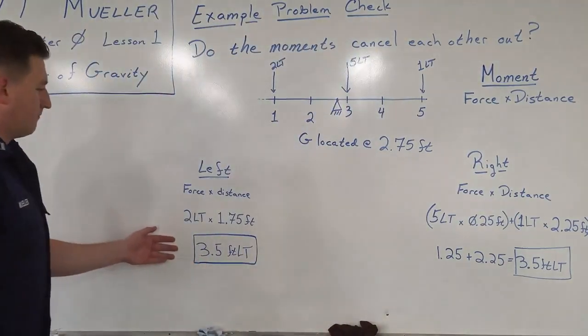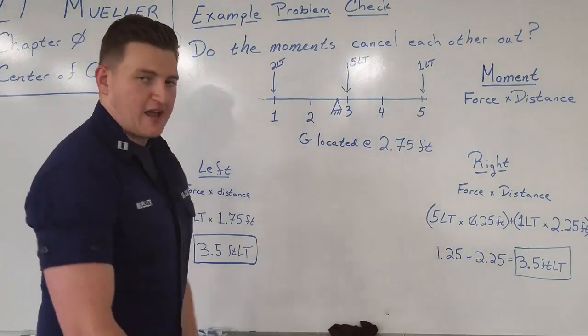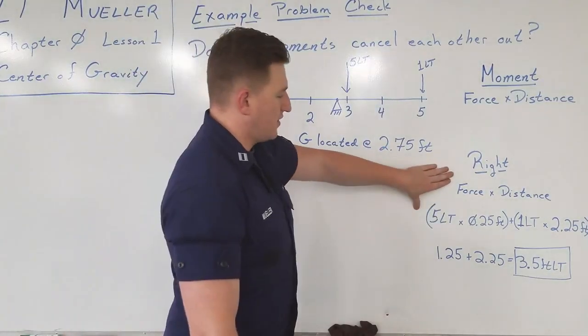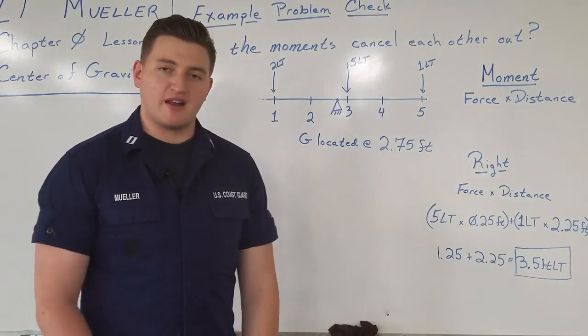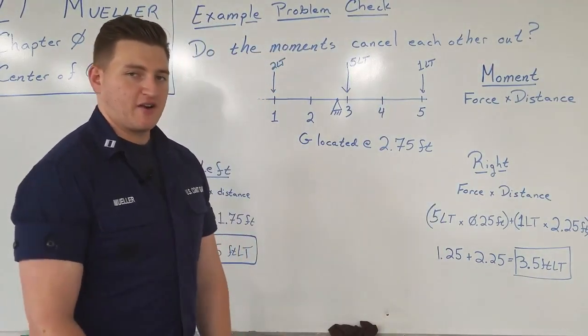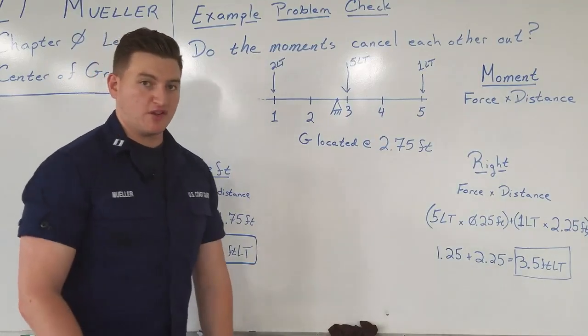So we see that the moments on the left side, 3.5 foot long tons, equals the moments on the right side, which is 3.5 foot long tons. So our calculation that we did in the previous example problem was correct.